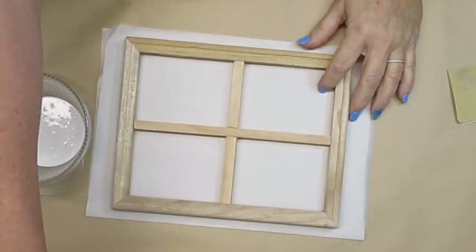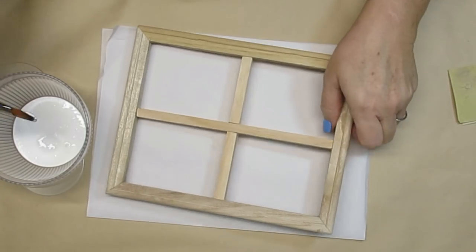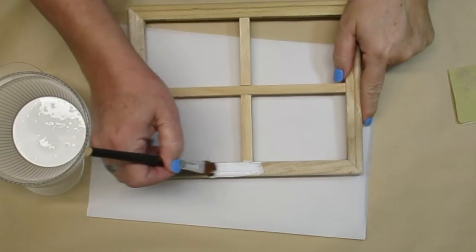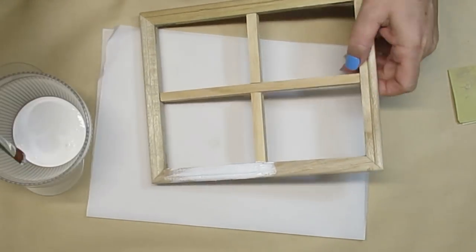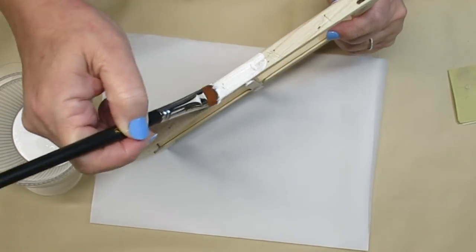Now that I've got it all assembled, it's time to paint. And I'm using my signature white, of course. But anyway, I'm going to go ahead and give this two really good coats. I'm also going to paint the back just with one coat.